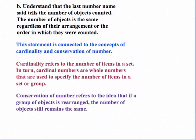Part B contains two statements. The first — understand that the last number name said tells the number of objects counted — is connected to the concept of cardinality. Cardinality refers to the number of items in a set. Cardinal numbers are whole numbers used to specify the number of items in a set or group; we're talking about quantities. We're not yet dealing with numbers as positions on a number line — we're dealing with numbers as they refer to quantities.